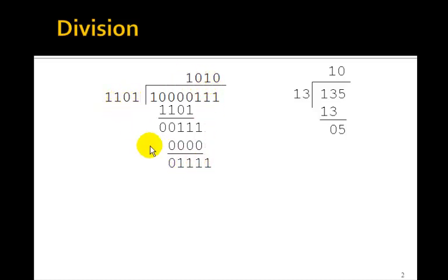1 times 1101 is 1101. Do the subtraction. You get 10, bring down the next 1. This goes in here 0 times. So you have one more subtraction, and we're done. So sure enough, 135 in binary divided by 13 in binary is 10 in binary with 5 as the remainder.